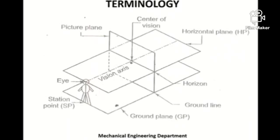One more very important point: in perspective projections there is no quadrant system as in orthographic projection. The observer always stands on one side, the picture plane is used to capture the projection, and the object will always be placed on the rear side of the picture plane. On one side of the picture plane the observer stands at a specified finite distance, and the object is always placed on the other side.